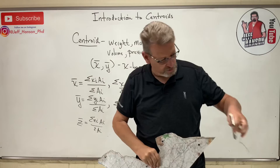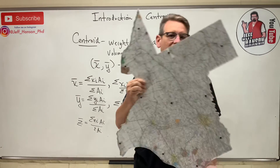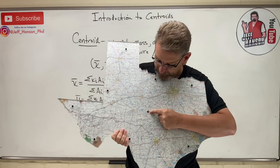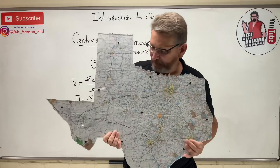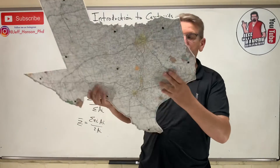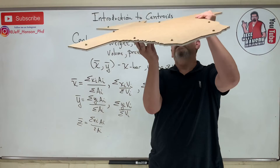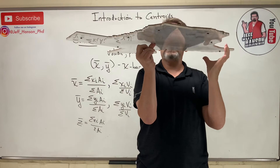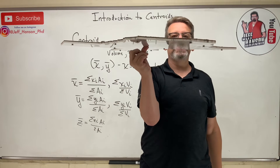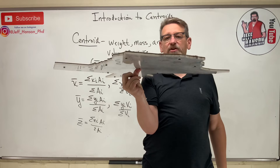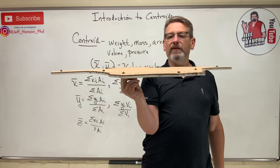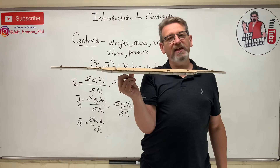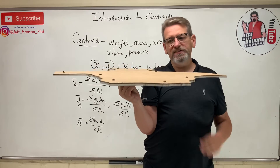For those wondering where the centroid of Texas is — it's at Mercury, Texas, a little town right north of Brady, Texas. And I should be able to put this on the end of my thumb right on that dot and balance the whole shape there — and look, perfectly balanced. That's the x-bar and y-bar location for this shape.